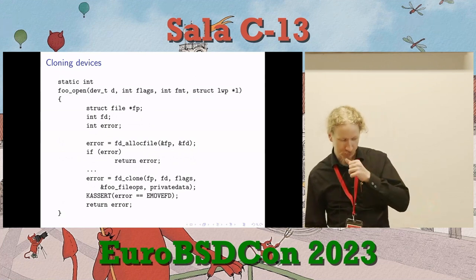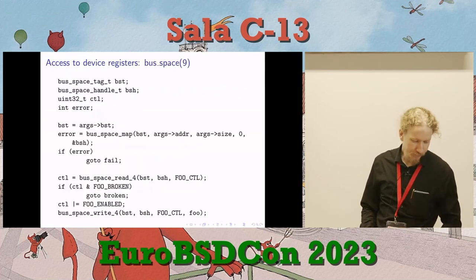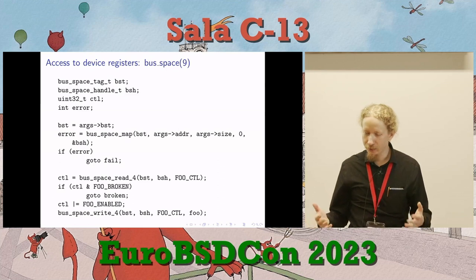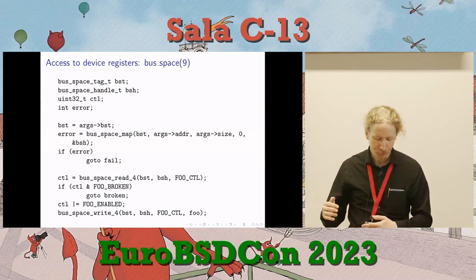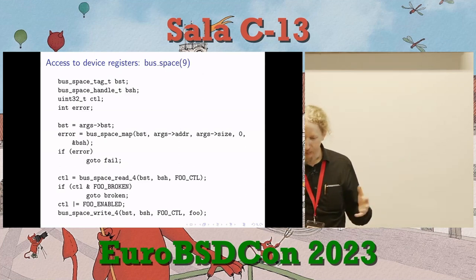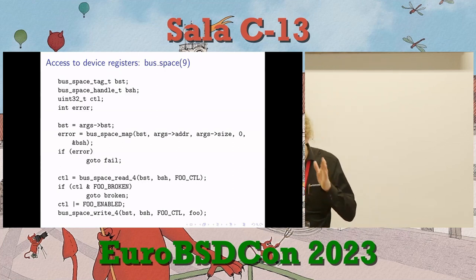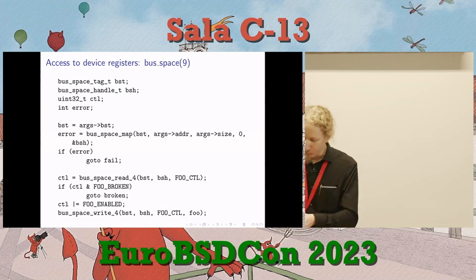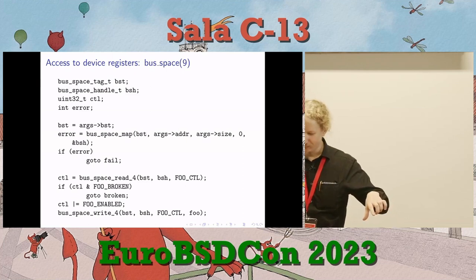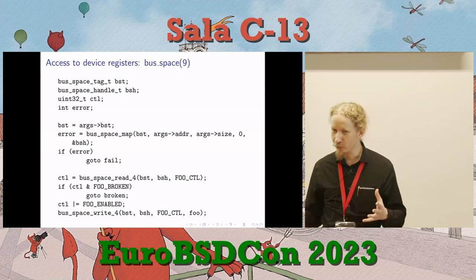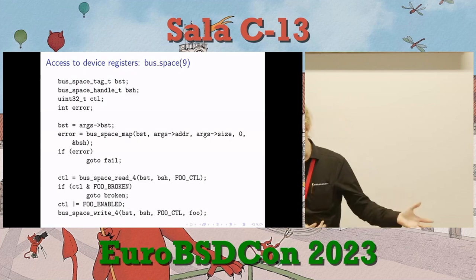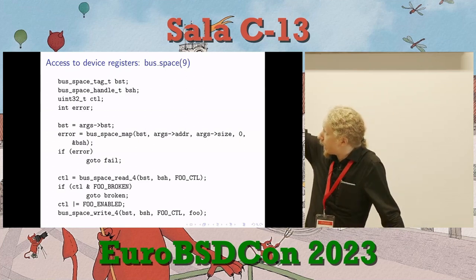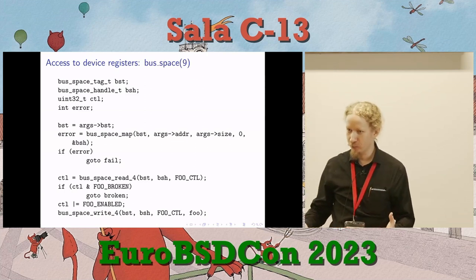For a cloning device, you specify an open function and a file ops set — similar to cdev but with per-open state rather than per-device state. An example is VHCI, the USB virtual host controller interface used for debugging and testing the USB stack. For bus space: hardware devices expose registers — sort of like a location in memory, but when you write or read them, they do magic hardware stuff instead of just remembering what you wrote. In legacy x86 systems you might have heard of IO ports — address 0x3F8 is the serial console in those systems. There's also memory-mapped IO.